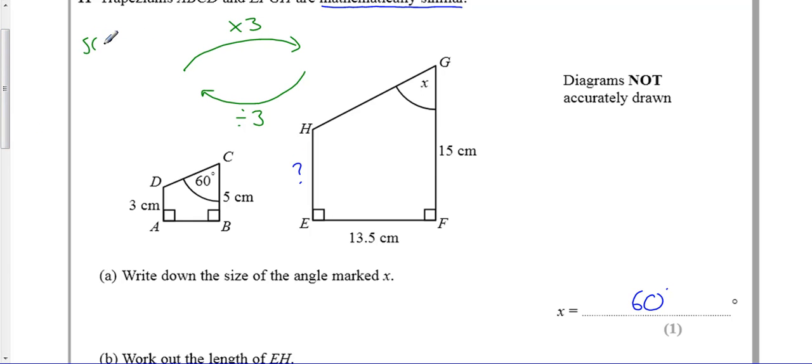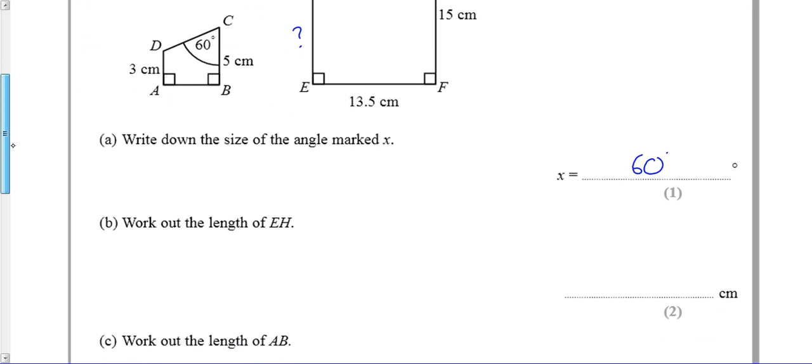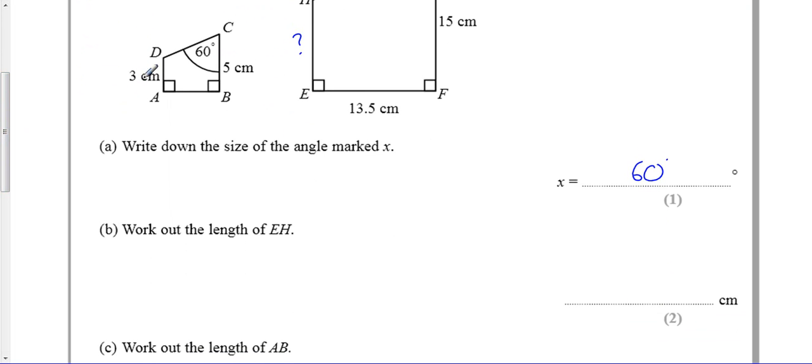we just discussed, that the scale factor is equal to three or one-third, depending on which way you're going. So what I've got to do, we know it gets three times bigger, so it's three multiplied by the scale factor of three, that gets this, so it's nine.